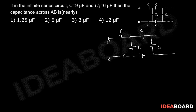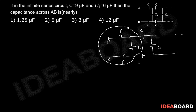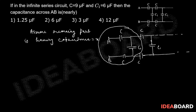What does this show? If you remove one section from the infinite series, the remaining part gives the same structure as the original question. Since this is an infinite series, all parts are the same. So we assume that the remaining part has capacitance equal to X.